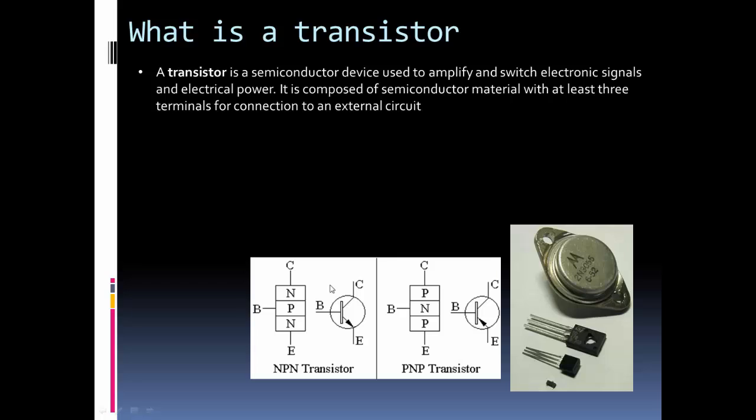For our NOT gate we're essentially using the switching action of a transistor. By applying the signal that we want to invert to the base, we can then use either the collector or the emitter connection as the output of our NOT gate. I'll show an example setup of that.